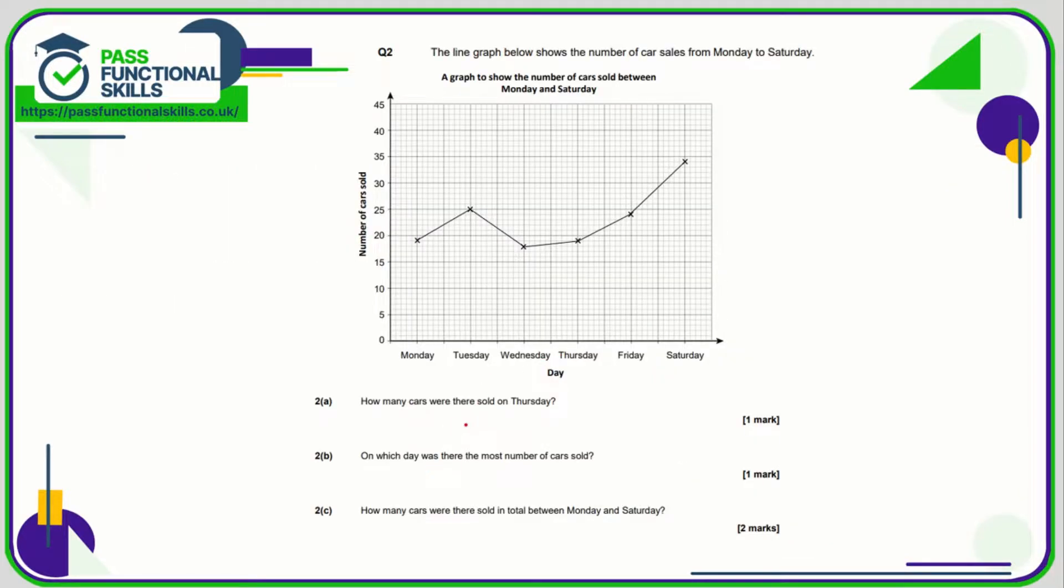Question 2a, how many cars were sold on Thursday? Well here's Thursday, let's just go up and it's this dot here. Let's just check the scale, we're going up in fives so each faint line is an increase of one. So if this line here is 20, it's one line beneath that so that is going to be 19 cars. On which day was there the most number of cars sold? So which dot is the highest? It's this one here and that is Saturday.